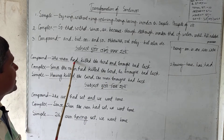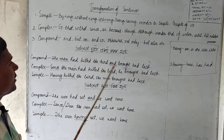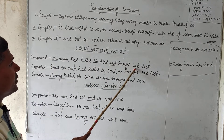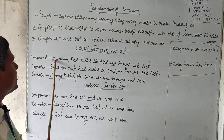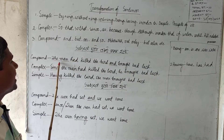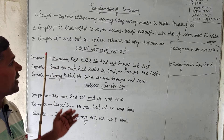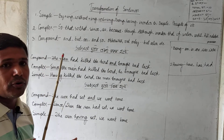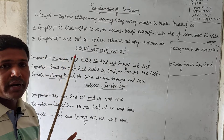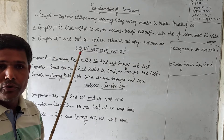The man had killed the bird and brought the bad luck. The second clause has the same subject. So we will do the same thing — if the subject is the same, we apply the 'being' or 'having' transformation rule.